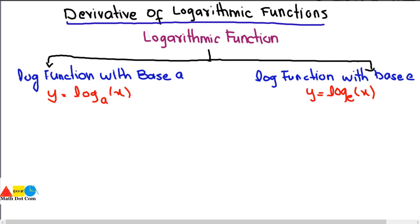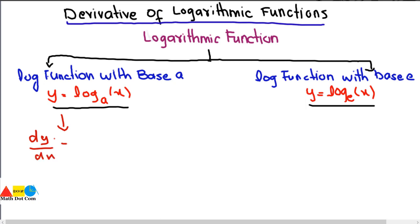There are two types of logarithmic functions: one is the logarithmic function with base A and the other is the logarithmic function with base E. The already calculated derivative of log base A of X is 1 divided by X times natural log of A. This is the pre-calculated derivative of the logarithmic function with base A.